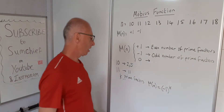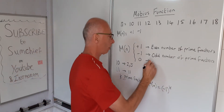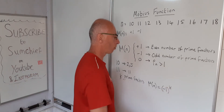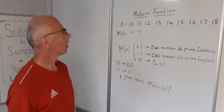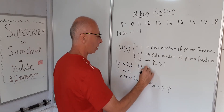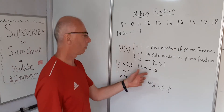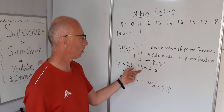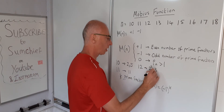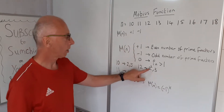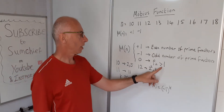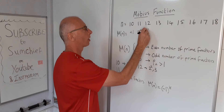The third option — mu of n equals 0 — is when any of the prime factors appears more than once, meaning a prime p divides n more than once. For example, 12 is made up of 2 squared times 3, and since 2 appears more than once as a prime factor, 12 takes the value of zero.